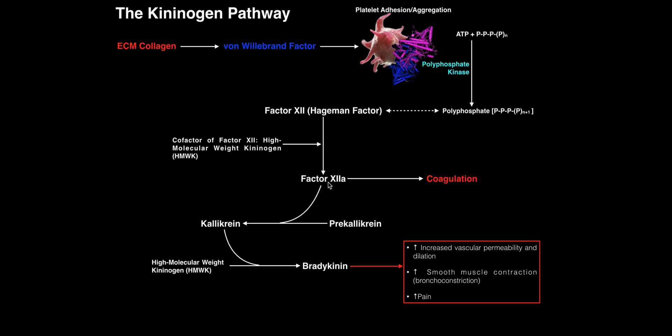Activated Factor XII also acts as a serine protease — an enzyme that clips other proteins to activate them. It acts on a molecule called prekallikrein. The term 'kallikrein' is believed to derive from the Greek or Latin word for pancreas, since that's where it was originally isolated. Prekallikrein, which is inactive, is cleaved by Factor XIIa into kallikrein. Kallikrein itself is then an active enzyme — essentially a serine protease in its activated form.